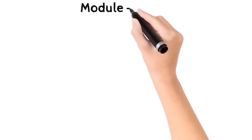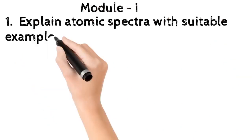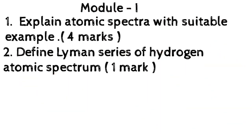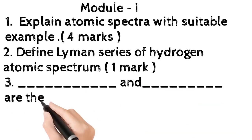Module I. Question 1: Explain atomic spectra with suitable example, 4 marks. Question 2: Define Lyman series of hydrogen atomic spectrum, 1 mark.